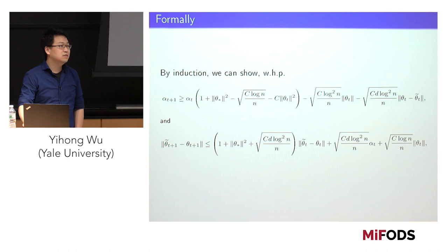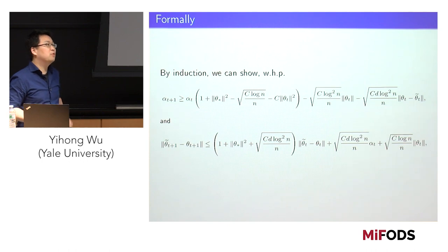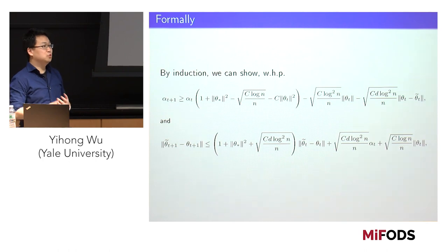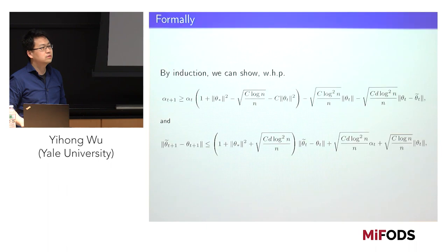Formally, you prove by induction on T that as long as you do not exit phase one, alpha grows exponentially, but the difference between the main sequence and the fake sequence also grows exponentially — yet this can be tolerated as long as you don't iterate too many steps. After that, you switch to a simpler analysis. The powerfulness of this technique is essentially as a way to analyze these dynamics by introducing an auxiliary sequence.